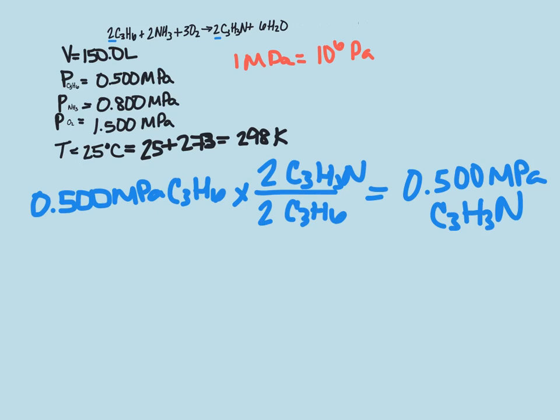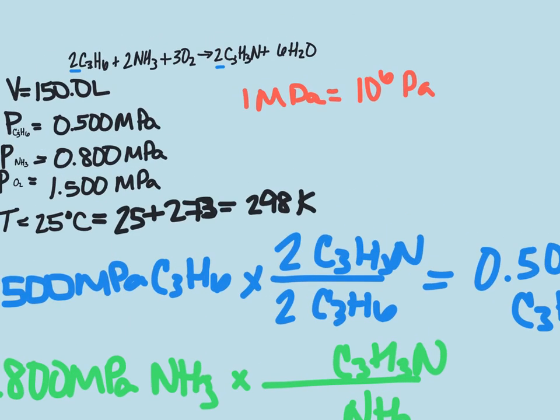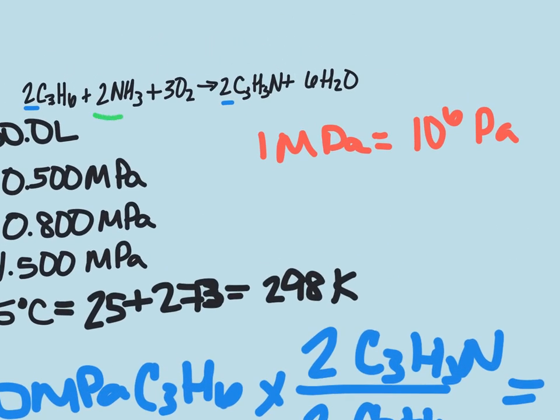We're going to do the same thing with our other two. We have 0.800 megapascals of NH3. We're going to multiply that by our molar ratio of NH3 to C3H3N. Looking up here, we see that it is also 2 to 2.